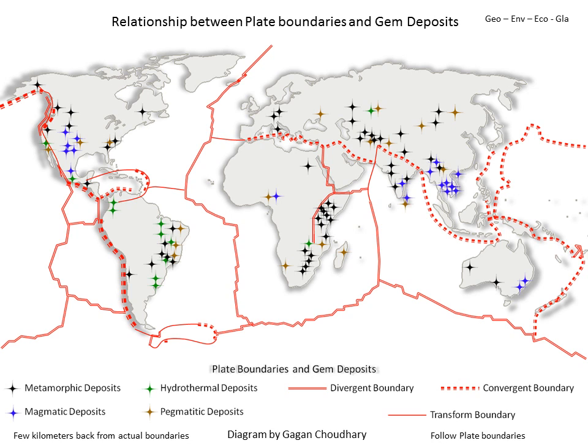Tonight we're going to focus mainly on what I call the reds: ruby, emerald, diamond, sapphire — the glitzy, most valuable gemstones — with one exception, hauyne, because it's a personal favorite and a beautiful gemstone. Let's get stuck into this interesting map.